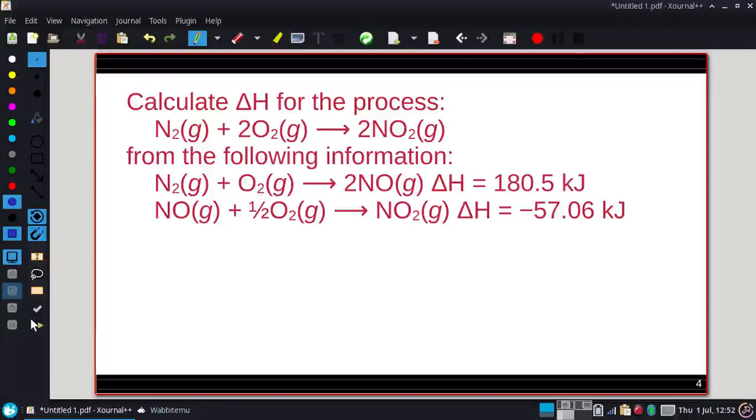Okay, we want to calculate the delta H for the following process. We have nitrogen reacting with oxygen, forming NO2. And we gave you nitrogen reacting with oxygen, giving you NO, and then NO reacting with some more oxygen to finally make the NO2.